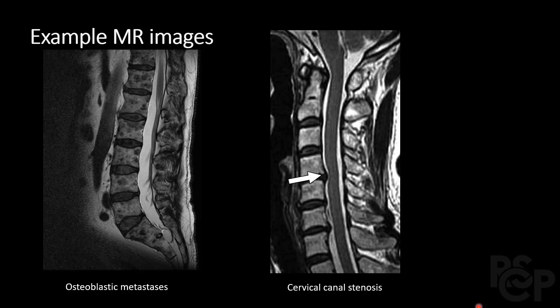Here are some example MR images. On the left we have osteoblastic metastases to the vertebral column as shown. On the right we have a case of canal stenosis in the cervical spine as indicated by the arrow. As you can see, MRI provides both great bony detail and excellent soft tissue detail.